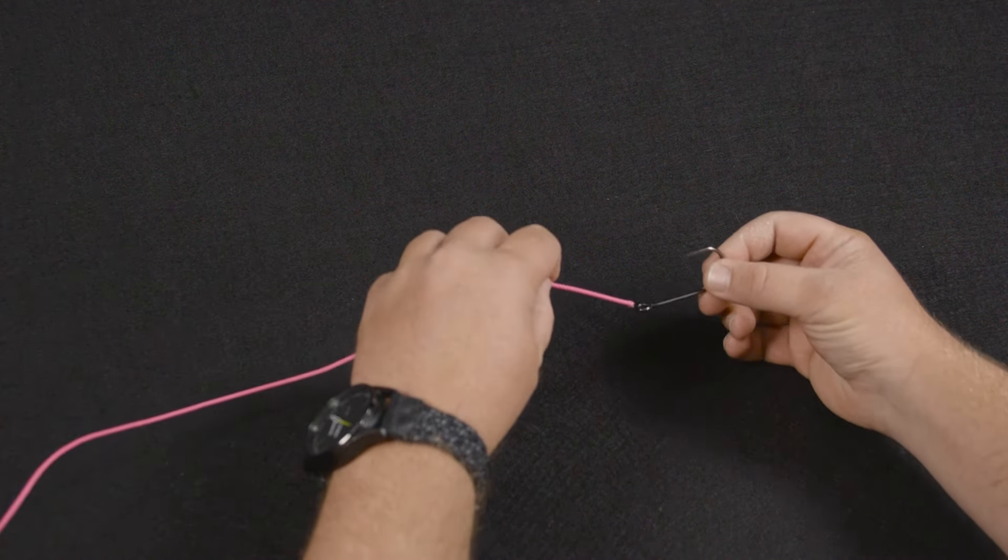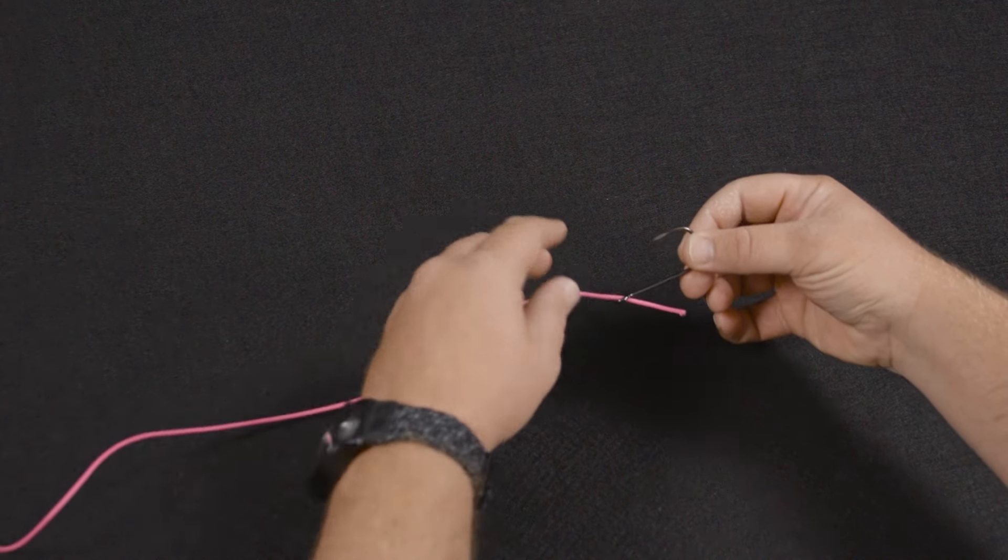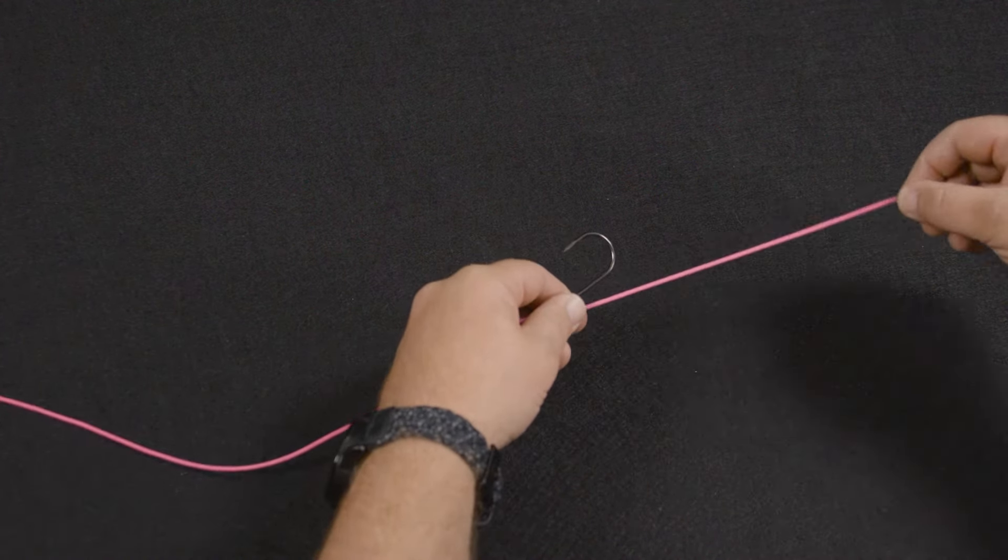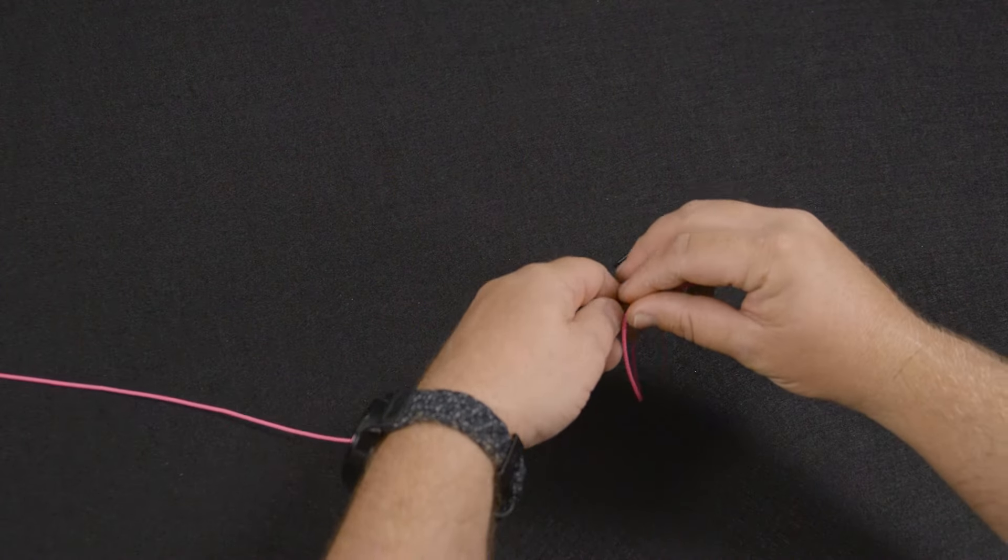So it's really easy. You simply pass it through the eye of the hook, make sure it's through the top of the eye of the hook, and then go ahead and make a loop, give yourself plenty to work with.